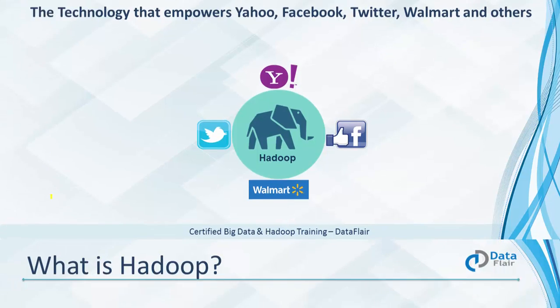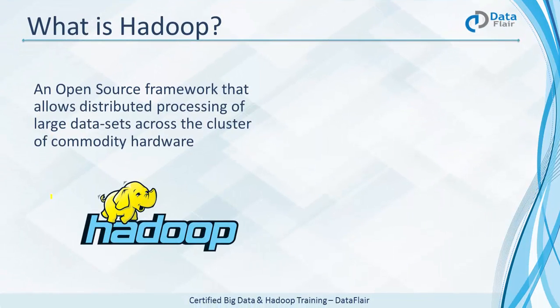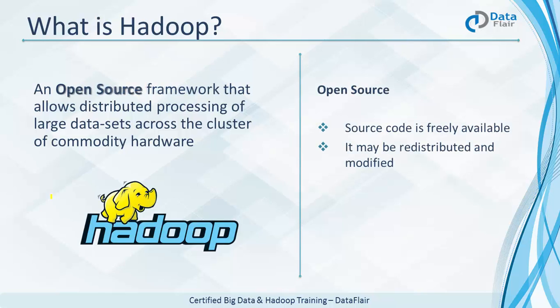Let's talk about Hadoop in more detail. It is an open source framework that allows distributed processing of large datasets on a cluster of commodity hardware. Starting with open source — it means the source code is open. You can simply download the source code, and if required, you can even modify it.